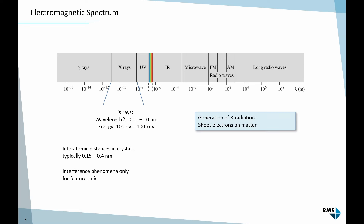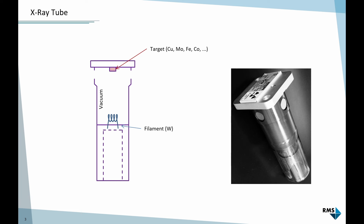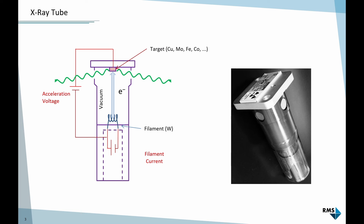So how can we generate X-rays? We use a cathode ray tube. It consists of a vacuum chamber. On one end there's a filament, usually made of tungsten. On the other end there's a target — a small metal plate typically made of copper, molybdenum, iron, cobalt, chromium, silver, or any pure metal. We heat up the filament with a filament current, then apply an acceleration voltage between the filament and the target, which produces an electron beam that collides with the target, and that is where the X-rays are generated.